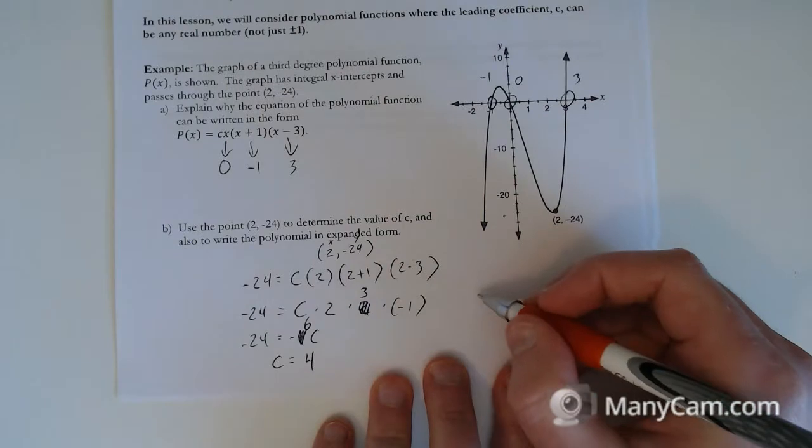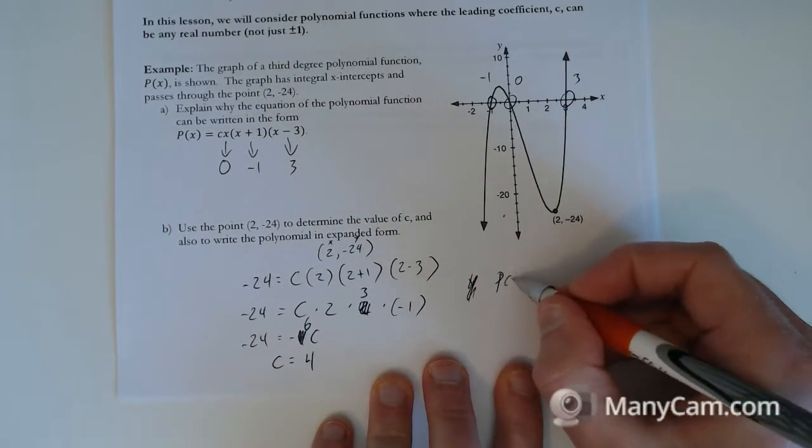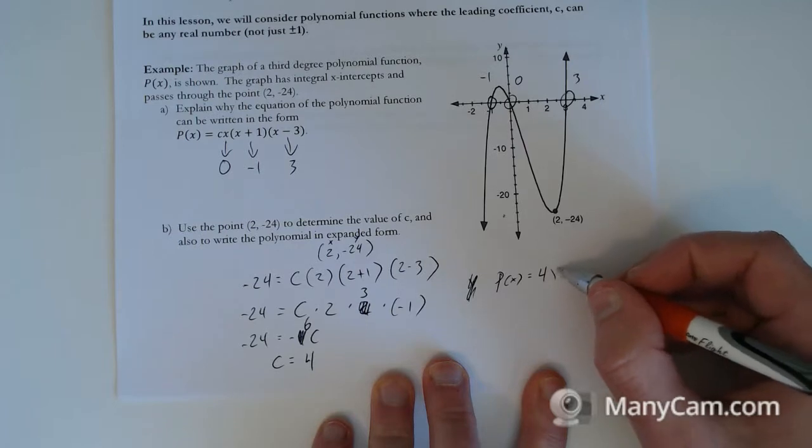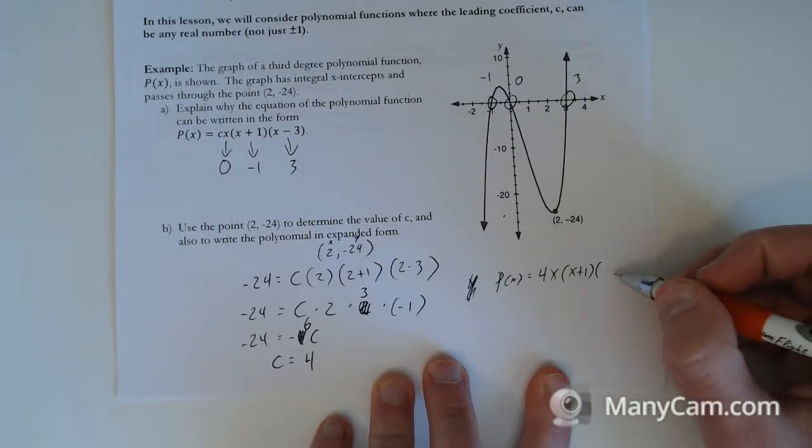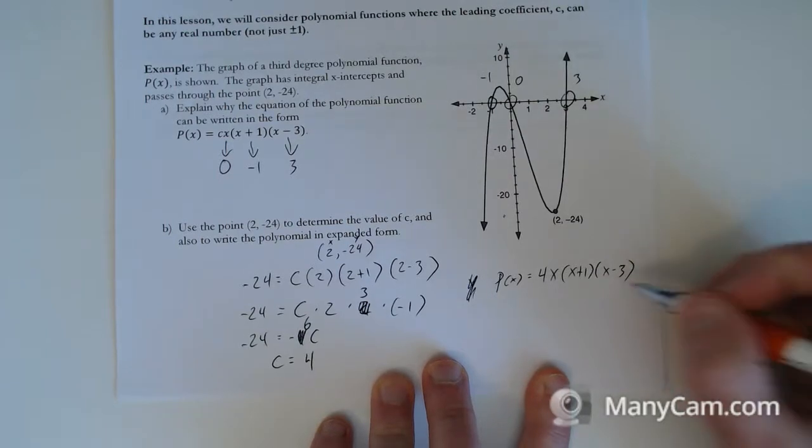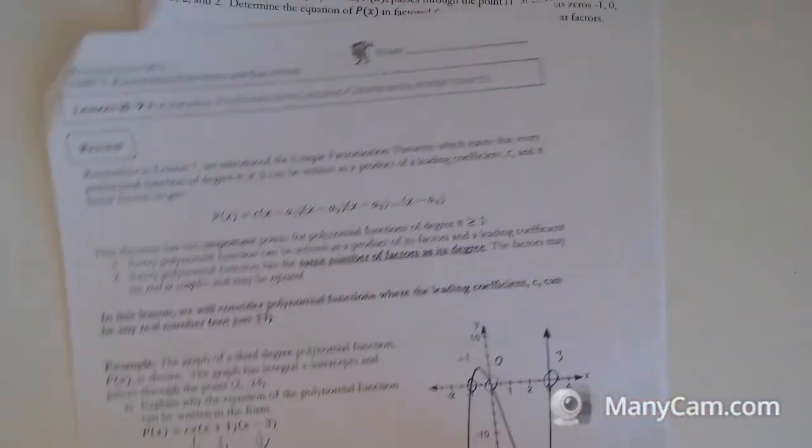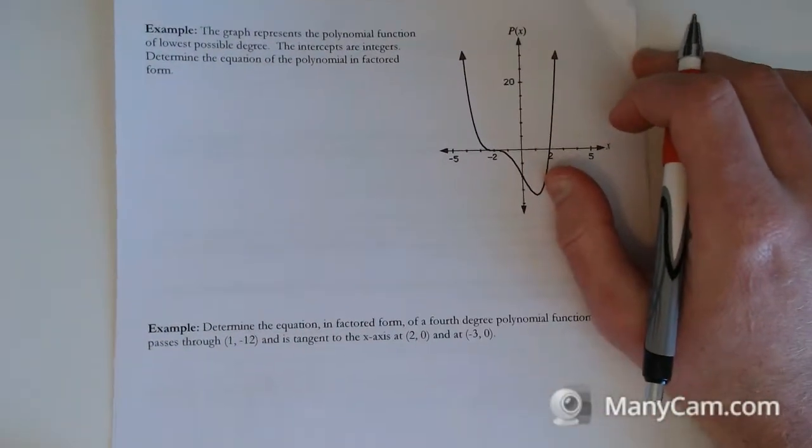And that's it. And then we would rewrite the equation. P of x is equal to 4 times x times x plus 1 times x minus 3. So just find your c value and replace it. That's all we're doing. Pretty much that's it for this lesson. I think it's actually fairly straightforward, but it's a good chance to make sure we understand everything from the previous lessons.